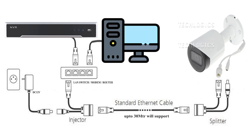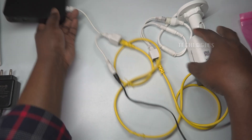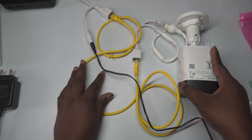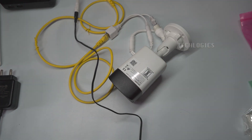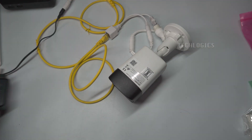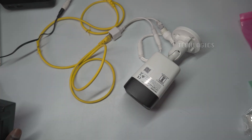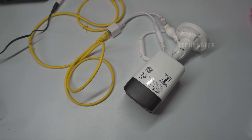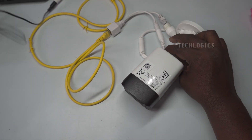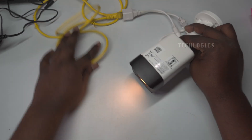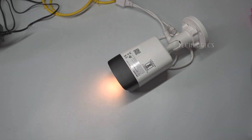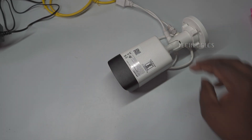Once you have made the connection as per the diagram, plug in the DC power adapter to power up the camera. The camera can then be accessed through your LAN network as usual. Start the process by performing the initial setup to configure your camera according to your needs. Note, this method is useful when you have one or two IP cameras that you want to integrate with a DVR or PC.